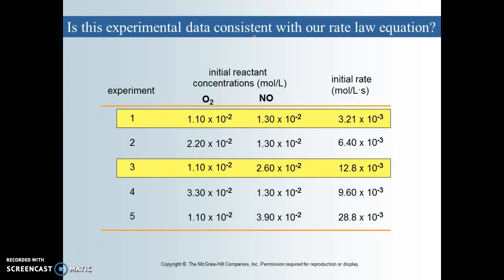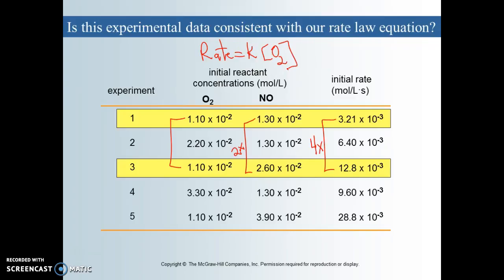Let's compare trial one to trial three. In this case, oxygen is the same in both trials, so we've eliminated that variable. What's different is that we doubled the NO concentration. What effect did that have on the rate? We can see the rate increased by four times, which means it is not directly proportional. I doubled this, and the rate increased by four times — so it is proportional to the square. The exponent for NO in our rate law is two.